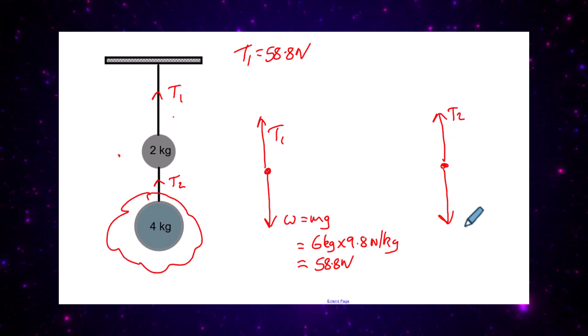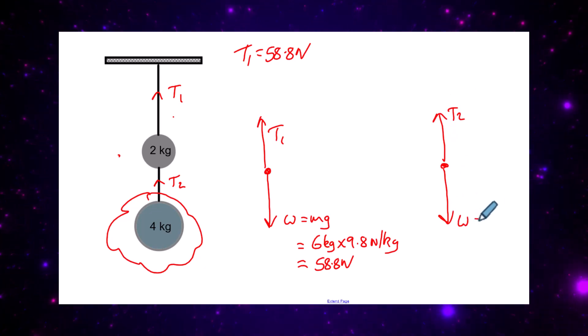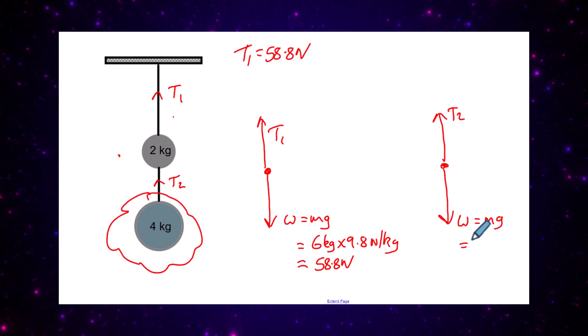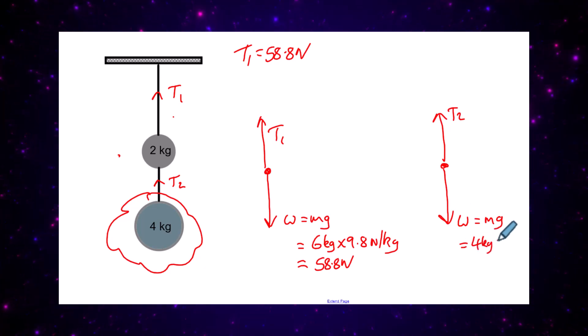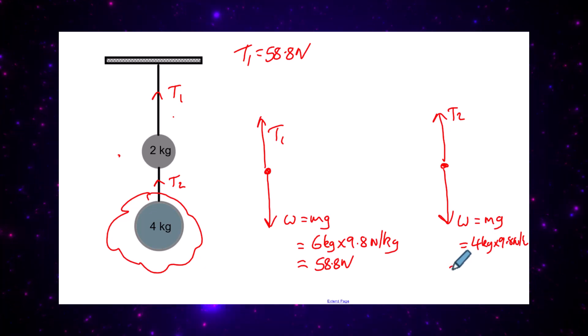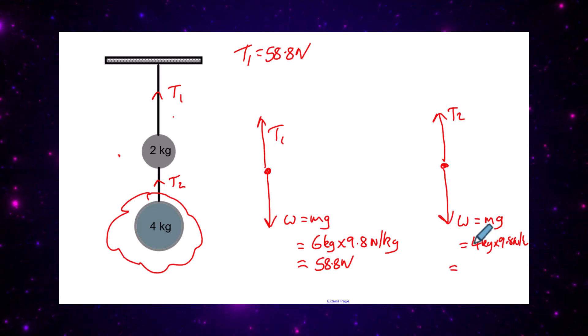The weight of the four kilogram ball is going to be weight equals mg, which is equal to four kilograms times 9.8 newtons per kilogram. We get four times 9.8, which gives us a value of 39.2 newtons.